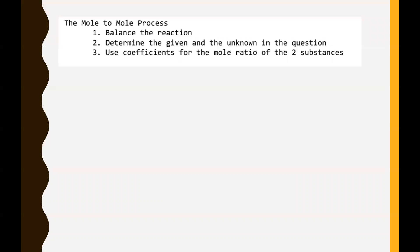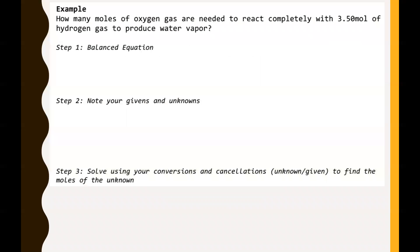The mole to mole process is: step one, balance your reaction. Step two, determine the given and the unknown in the question. And then step three, use coefficients for the mole ratio of the two substances. We've done a lot of this before. We'll start with a pretty quick and easy example.